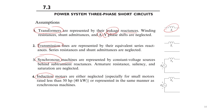Assumption number two concerns transmission lines. Lines are represented by their equivalent series reactance. The shunt resistance and shunt admittances are neglected. Especially for power transmission, the resistive part of the transmission line is normally much less than the reactive part, so it is omitted.